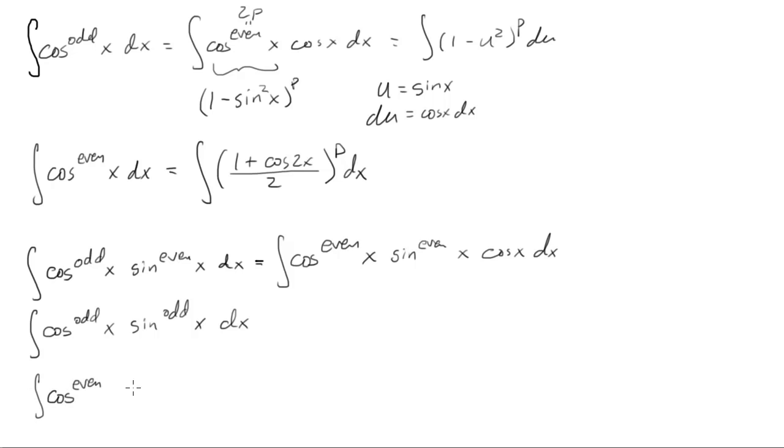Cosine to an even power and sine to an even power. I can reduce this to what I've already solved the case. Pythagorean theorem on the even power. And now it's pure powers of cosine, odd and even after I expand.